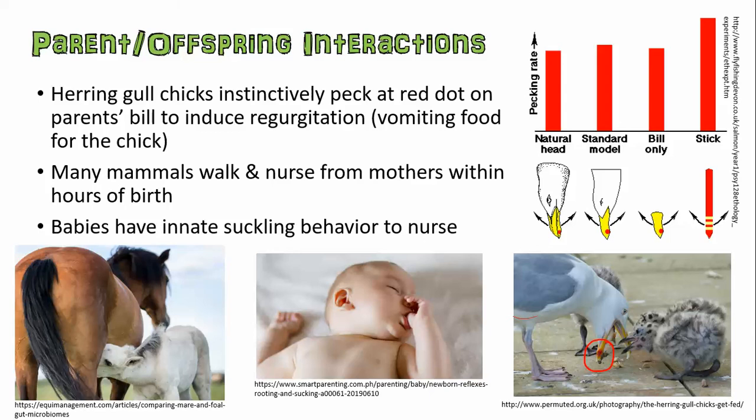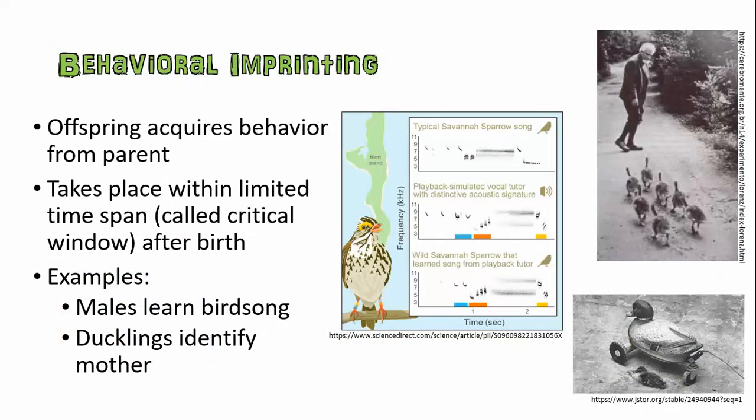If you basically put your finger in a baby's mouth and rub up on the roof of their mouth, they will instinctively start suckling as if they're nursing. That's why you can put a bottle in a baby's mouth and the baby will instinctively start suckling to get milk. That's necessary, because without that innate behavior, the baby would not get nourishment.